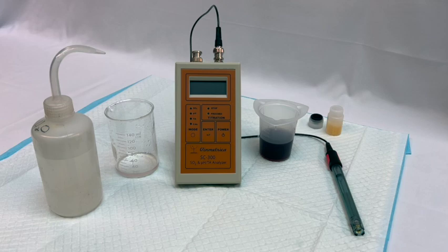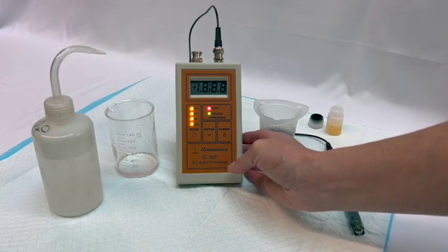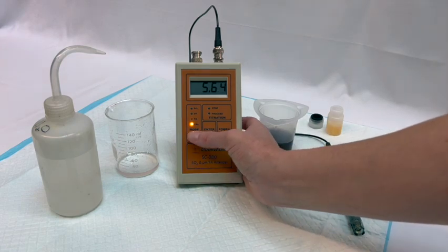Let's get started. To run the pH test, use the mode button to navigate to pH. Then make sure your electrode is rinsed thoroughly.